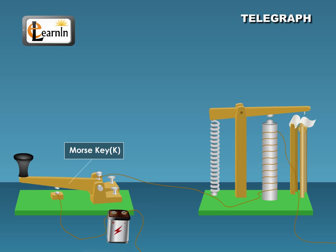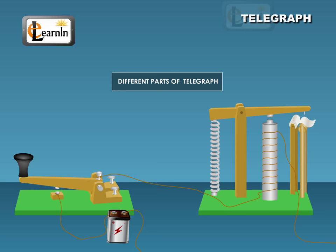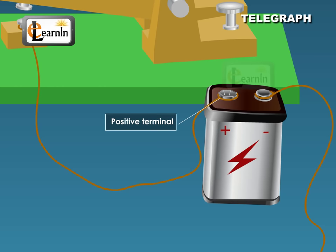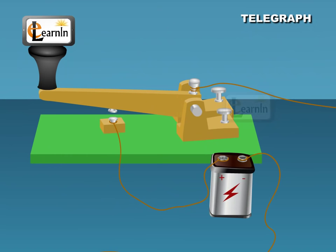The different parts of telegraph are connected as shown. At place A, the Morse key K is connected to the positive terminal of battery B and the negative terminal is connected to the ground or earth.